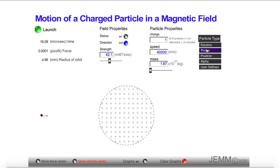The particle we're going to look at is a proton. And the speed we're going to set is 20,000 meters per second. We've added a magnetic field here, a 42.1 millitesla. Let's see what happens.